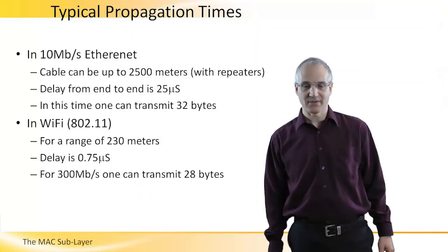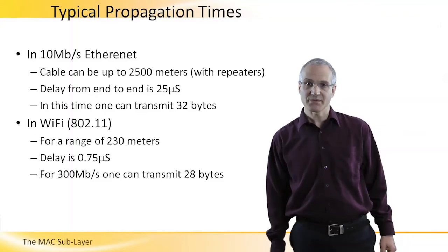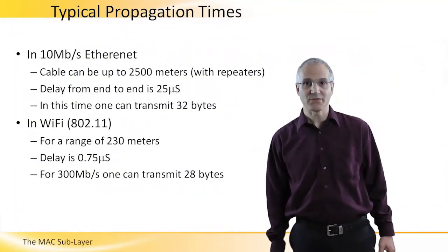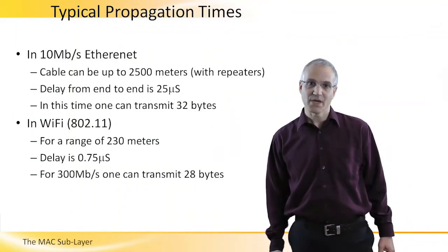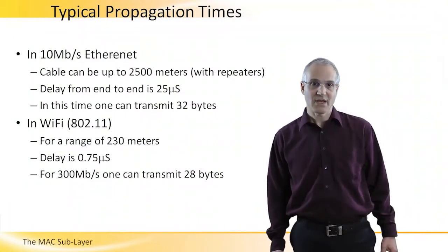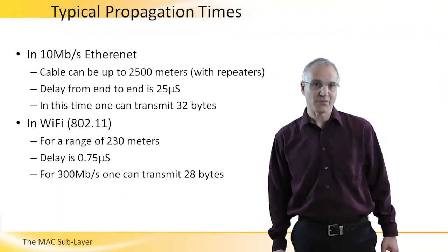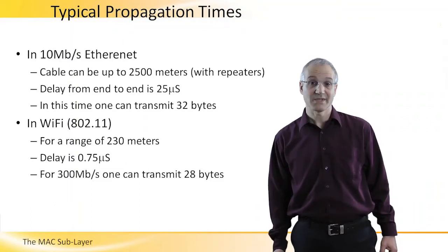To understand the typical propagation time, let's look at two examples. First, the 10 Mbps Ethernet cable. In Ethernet, a cable can be up to 500 meters and up to five of them can be connected with repeaters to form a medium of length 2.5 km. The delay from end to end in this medium is 25 microseconds. And in this time, at 10 Mbps, we can transmit 32 bytes. So only after 32 bytes are transmitted, the other end of the cable starts hearing the transmission. In Wi-Fi, nowadays, we're using ranges of up to 230 meters. And the delay using the speed of light is about three quarters of a microsecond. At 300 Mbps, one can transmit 28 bytes before the other end of the range will receive the first bit.